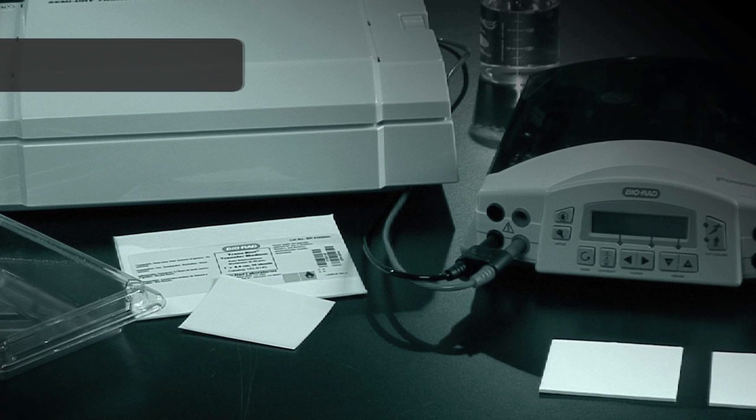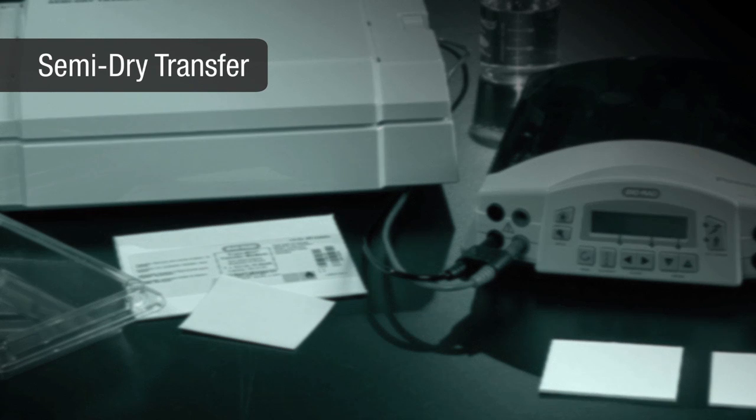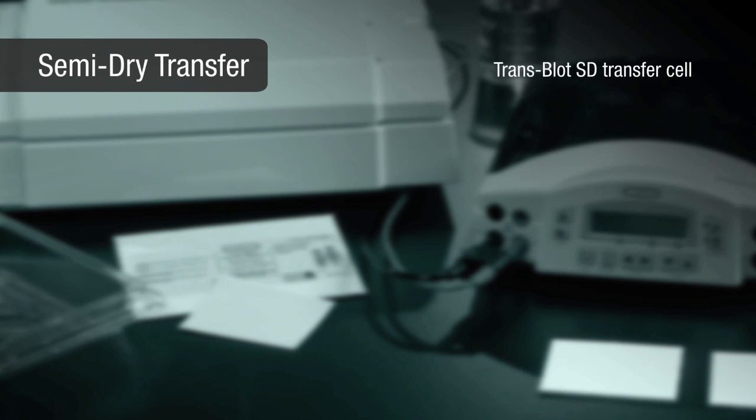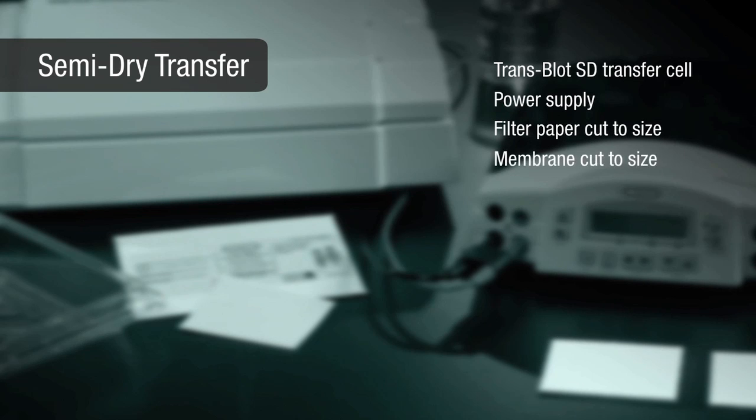The Trans-Blot Semi-dry system also requires a number of components including a Trans-Blot SD transfer cell, a power supply, two pieces of extra-thick filter paper, and a nitrocellulose or PVDF membrane cut to the size of the gel. You will also need to make 200 milliliters of buffer per gel for the transfer.